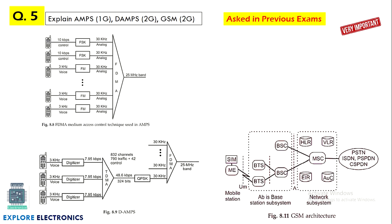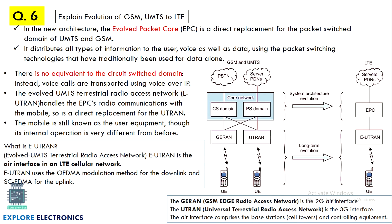Regarding 1G, 2G, and 3G, they may ask to write the architecture. If they ask about 1G, 2G, or GSM, we need to write AMPS, DAMPS, and GSM with respect to those technologies. They may ask what is the important technology in 1G, or directly ask to explain AMPS or DAMPS, or generally the GSM architecture. Even if they ask about 2G, with a relevant diagram you can write GSM and DAMPS.